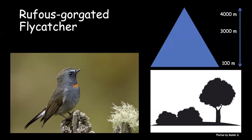The rufous-gorgeted flycatcher is another undergrowth bird, but if you look at this bird you'll always find it in more degraded habitat compared to slaty-blue or slaty-backed flycatcher. Found up to about 3,000 meters — one of the highest-elevation flycatchers in the country — and goes down to 100 meters in winter, showing typical elevational movement.